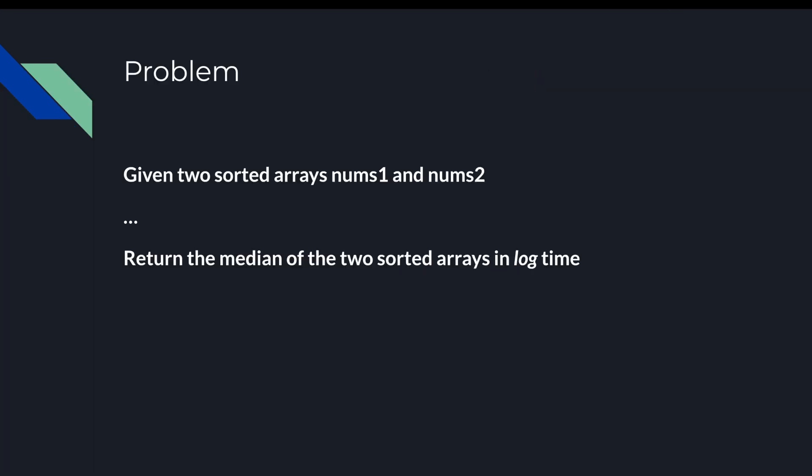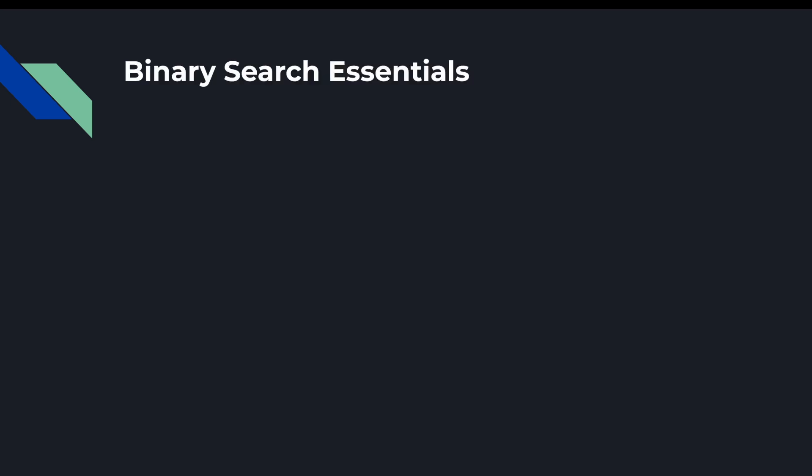The problem description is pretty simple. We're given two sorted arrays, nums1 and nums2, and we're told to return the median of the two sorted arrays in log time. Since we're told in the description that we need to find a log solution, and given that the arrays are sorted, that hint should point you toward a binary search solution.